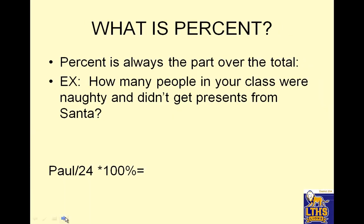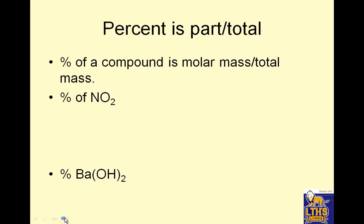So what is percent? Percent is always the part over the total. For example, how many people in your class were naughty and didn't get presents from Santa? Well, there's only one, and that's Paul. So Paul divided by 24 is 1 over 24 times 100. That would be 4.17%. Percent is part over total.